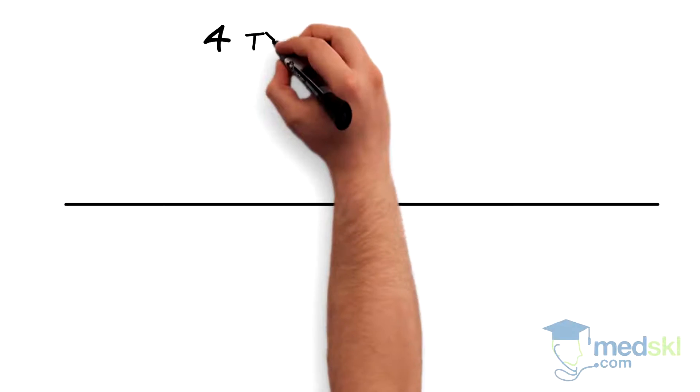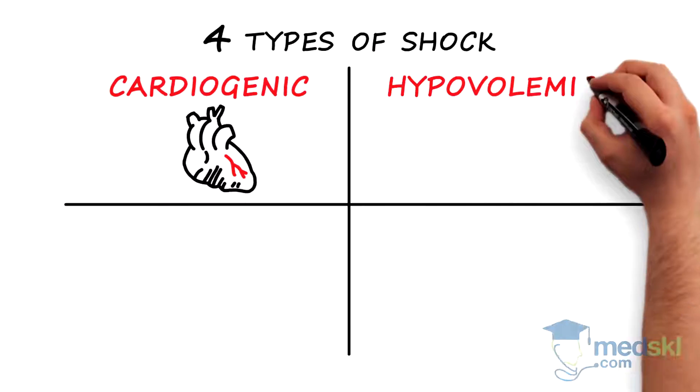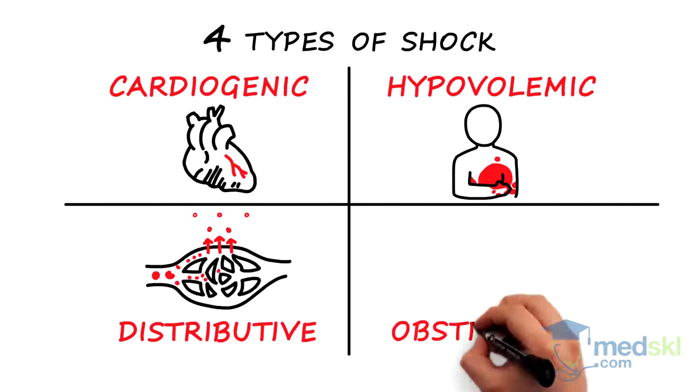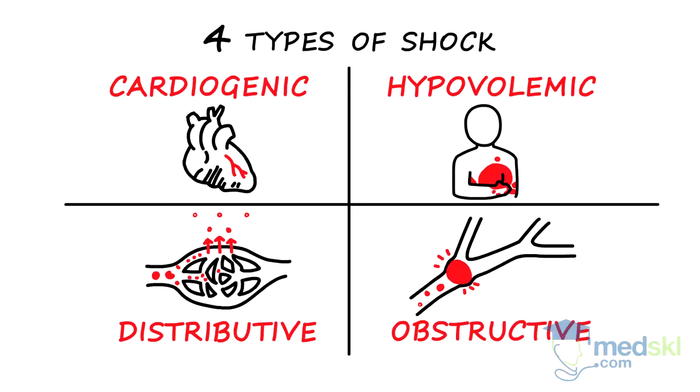Optimizing therapy for a patient in shock involves determining and treating the underlying mechanism. There are generally four types of shock: cardiogenic, hypovolemic, distributive, and obstructive.